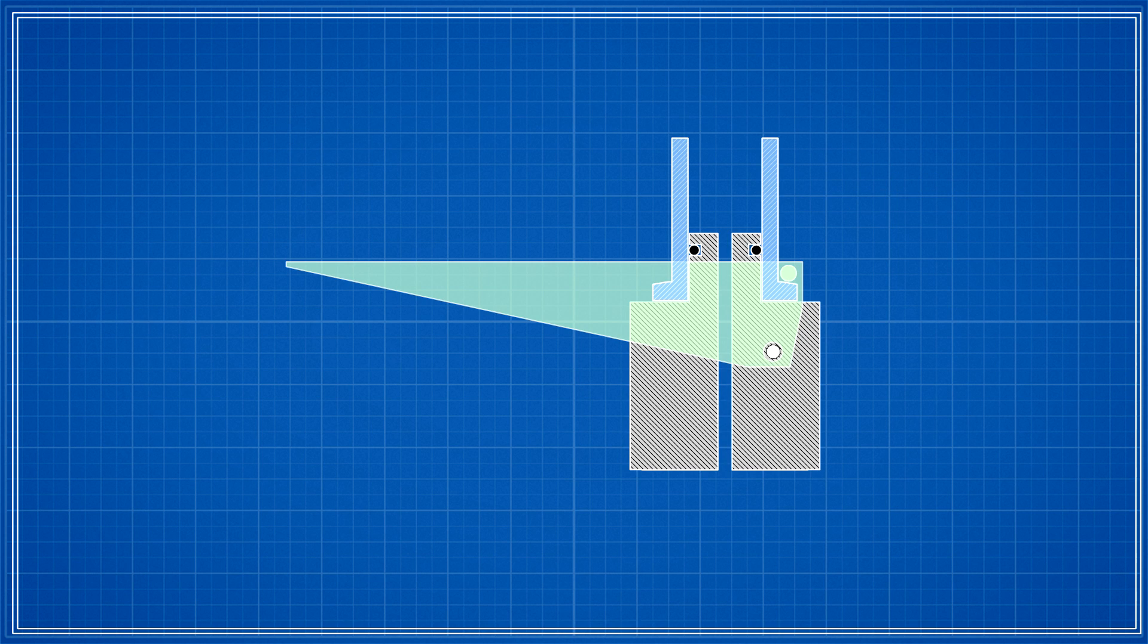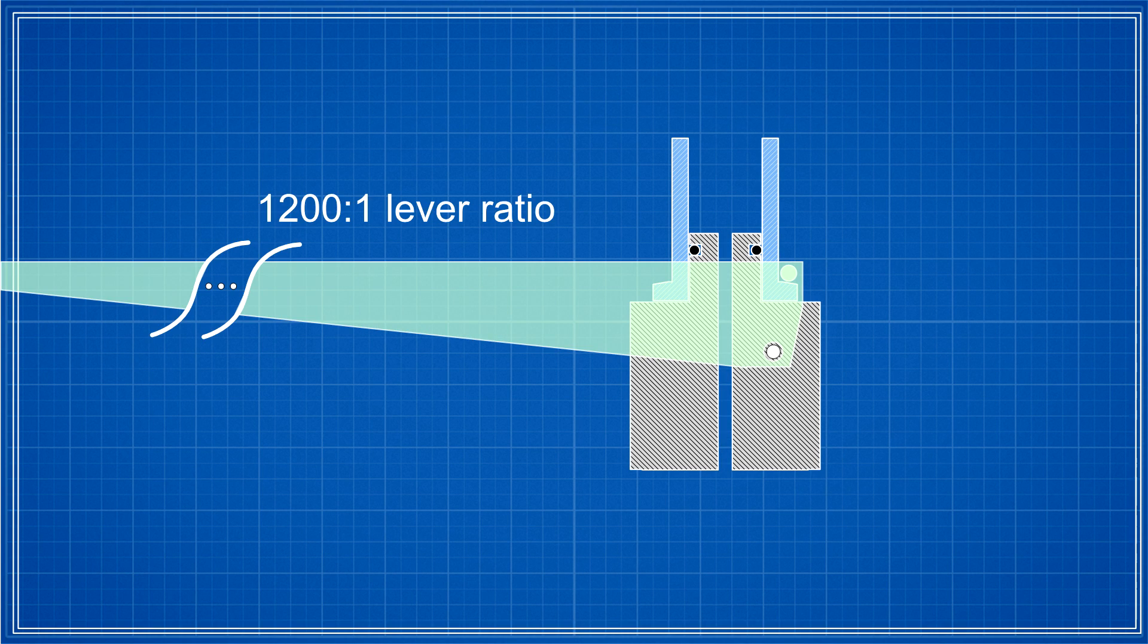This is where the second issue comes in. Having a single lever with a 1200 to 1 lever ratio makes for a very long lever, which is not practical on a rocket.